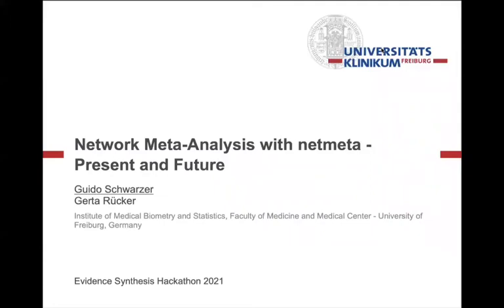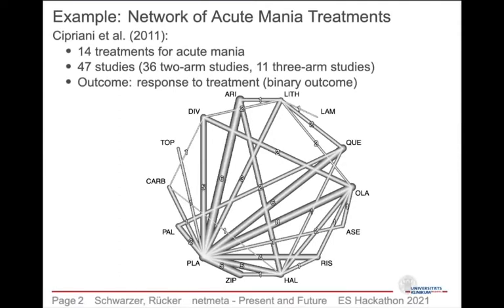My presentation is about network meta-analysis with NetMeta. I would like to start with an example with a network of 14 treatments for acute mania.